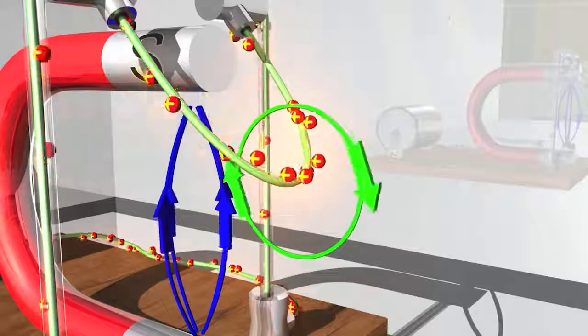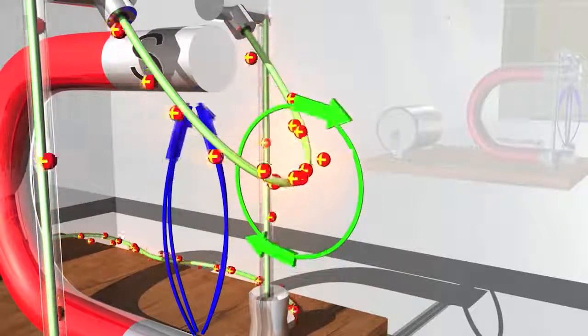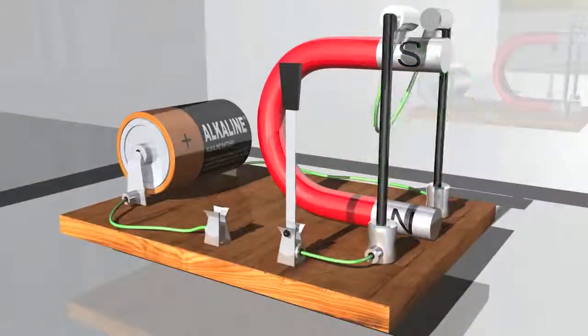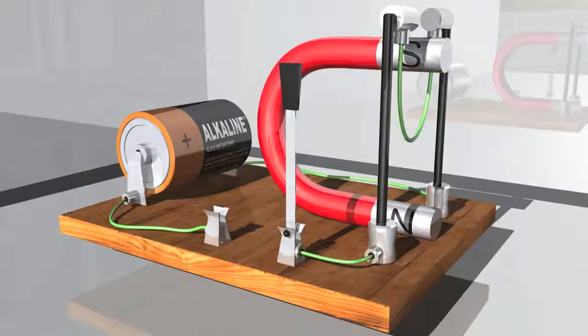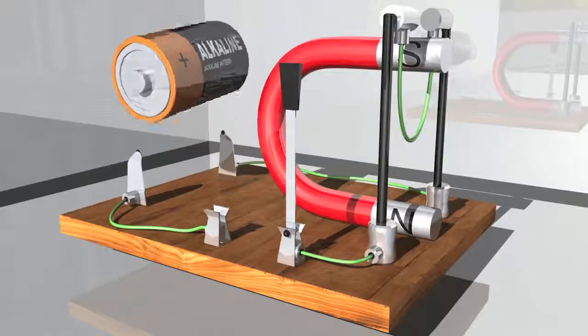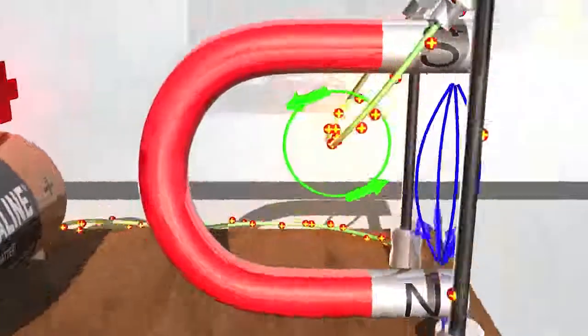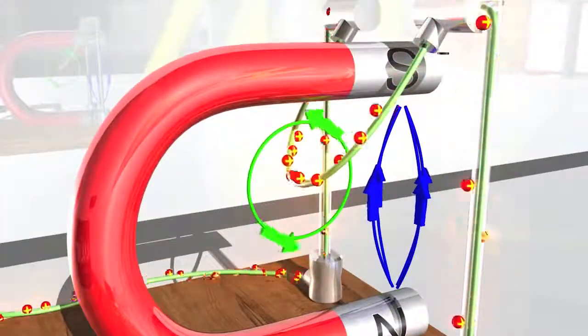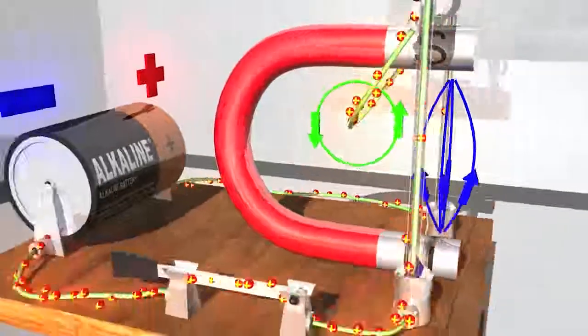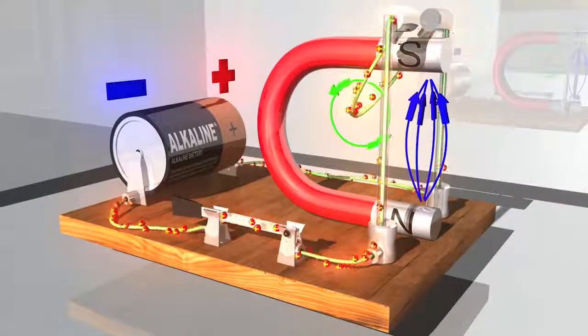The pendulum swings in a different direction, perpendicular to the horseshoe magnet's field and to the movement of the current. If we reverse the direction of the current, the magnetic field that it generates will turn in the opposite direction, causing in turn the pendulum to swing in the opposite direction.